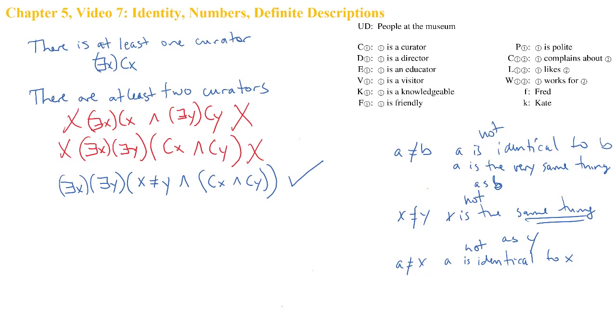We can also think of this denial of identity as an assertion of distinctness — they are, in fact, two different objects. And that is how, over on the left-hand side, we ensure that we get at least two.